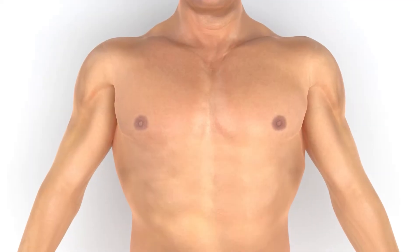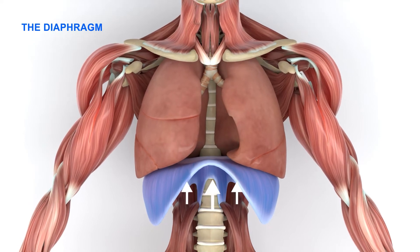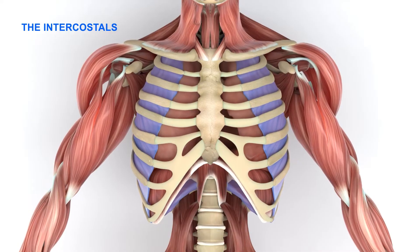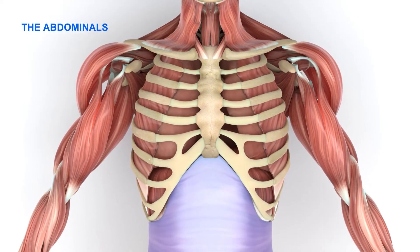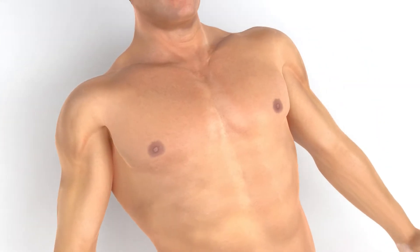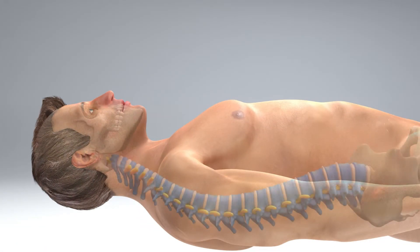We breathe using three groups of muscles: the diaphragm, the intercostals, and the abdominals. These muscles receive their nerve supply from the brain via the spinal cord.